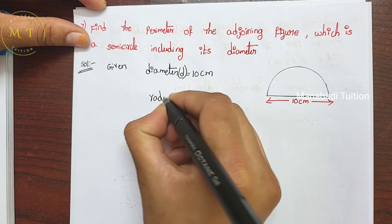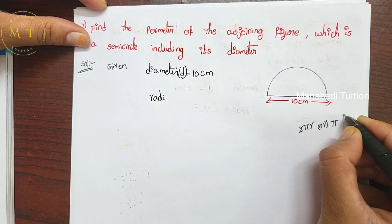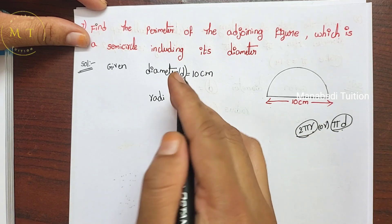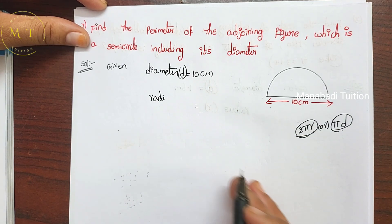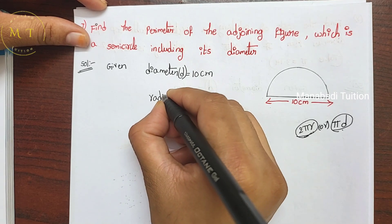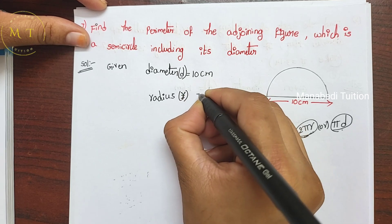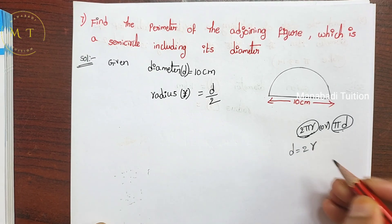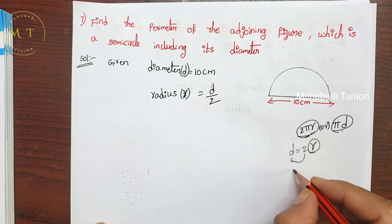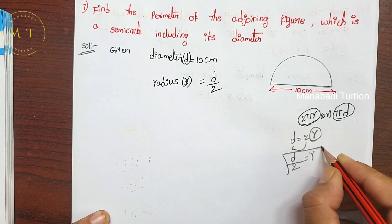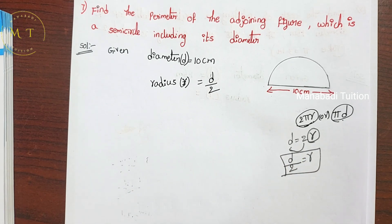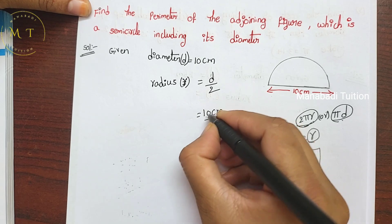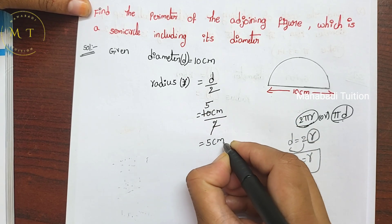The circumference formula for a circle is 2πr or πd. The 2πr formula uses the radius. So we need to find the radius first. R equals D divided by 2. The D value is 10 centimeters divided by 2, which gives us 5 centimeters.